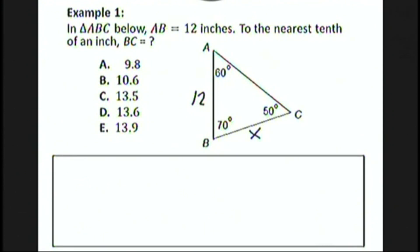Well, let's use the law of sines. We have 12 over sine 50 degrees—that's these two—equals x over sine 60 degrees over here. And now we just solve for x.